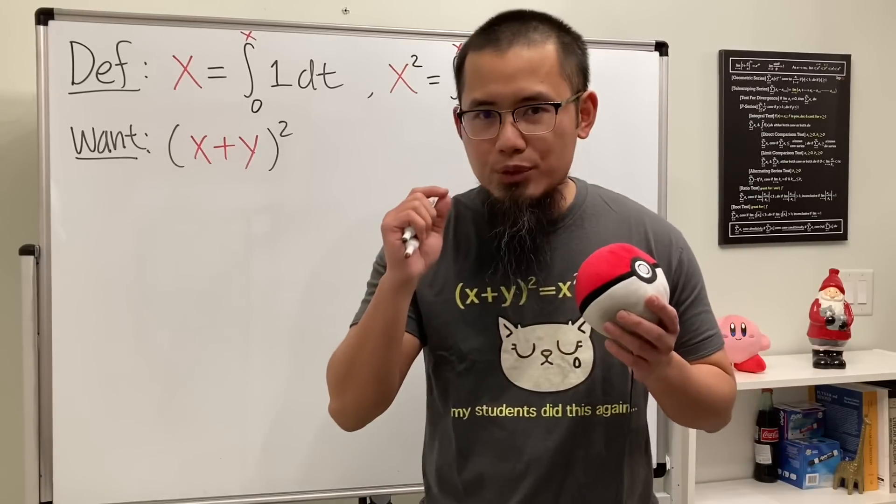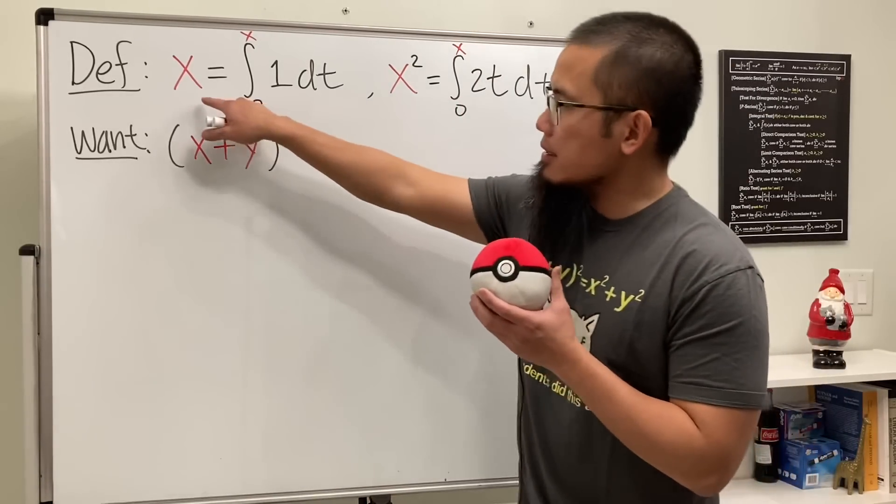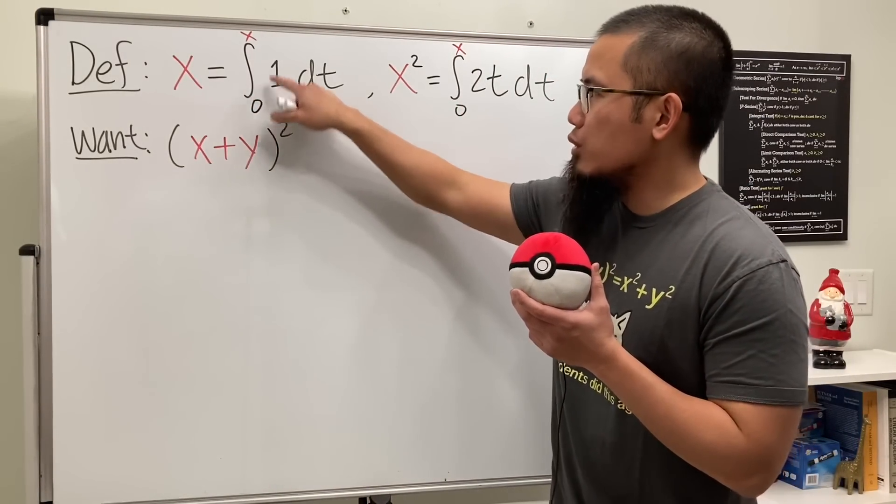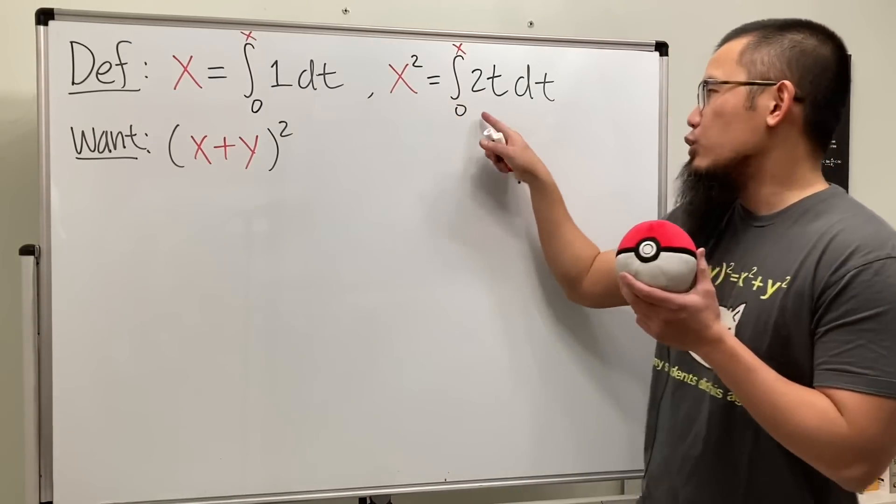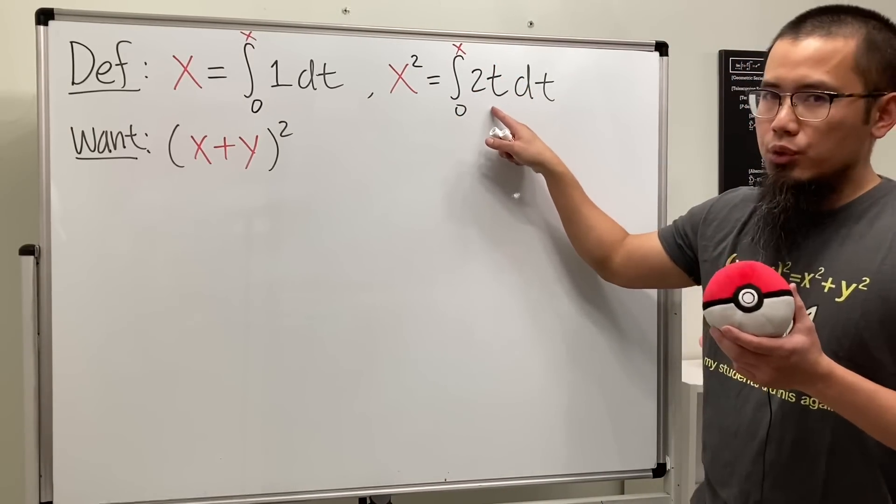Well, the key is we will have to use the given definition. x is defined to be the integral going from 0 to x of 1 dt, and x² is defined to be the integral going from 0 to x of 2t dt.